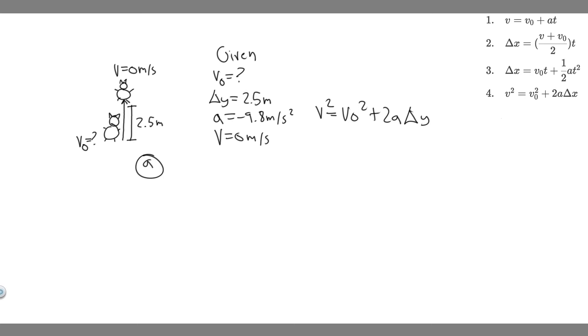And so all we got to do is just plug in. So v is just 0 squared, which is 0, equals v sub 0 squared, plus 2 times a, which is minus 9.8, times delta y, which is 2.5. So solving for it, we can minus v sub 0 squared to the other side. You get minus v sub 0 squared equals 2 times minus 9.8 times 2.5. Your minus signs are going to cancel, and then we can square root both sides to get rid of that. So basically you get v sub 0 equals the square root of 2 times 9.8 times 2.5. So what you want to do is just plug this in.